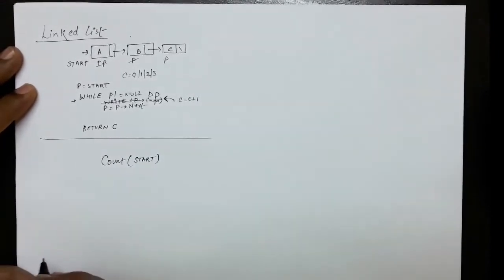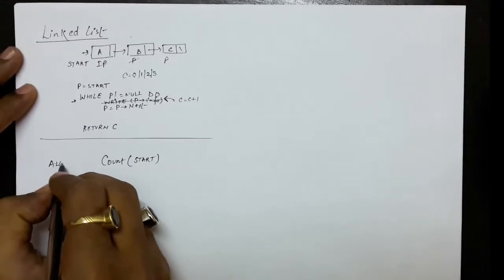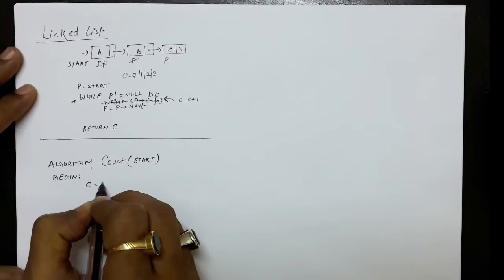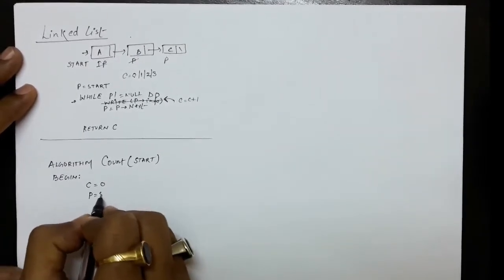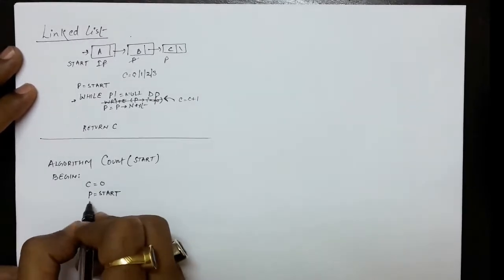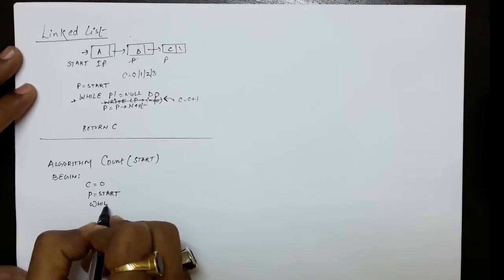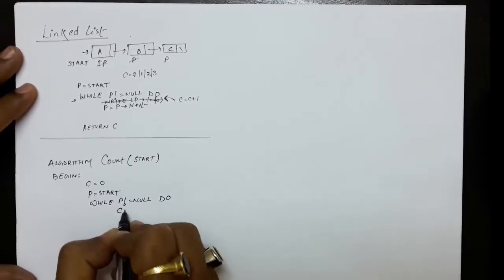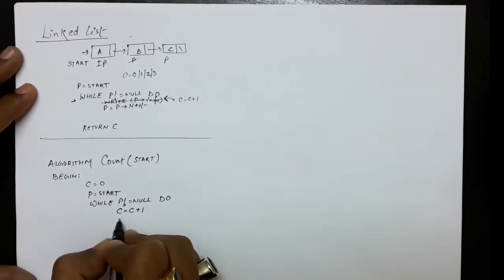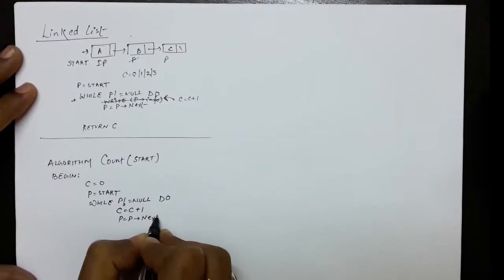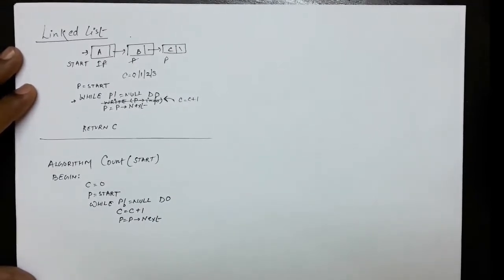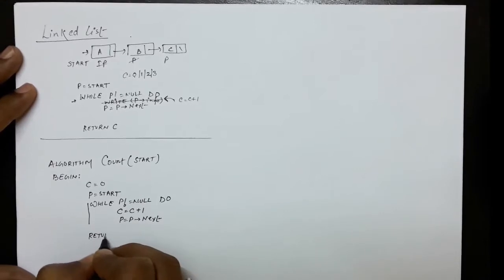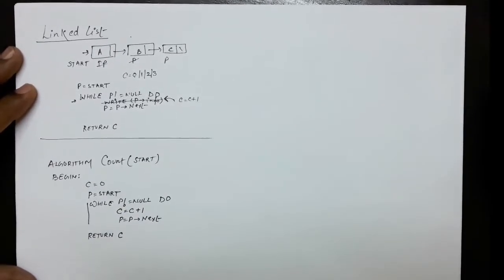Given the start node's address, at the very first you take a counter initialized to 0, then a pointer P to point to the start node. While P is not equal to null, you increment the counter by 1 and then move the pointer to the next node. Once the loop finishes, you return the value of the counter which tells you the number of nodes.